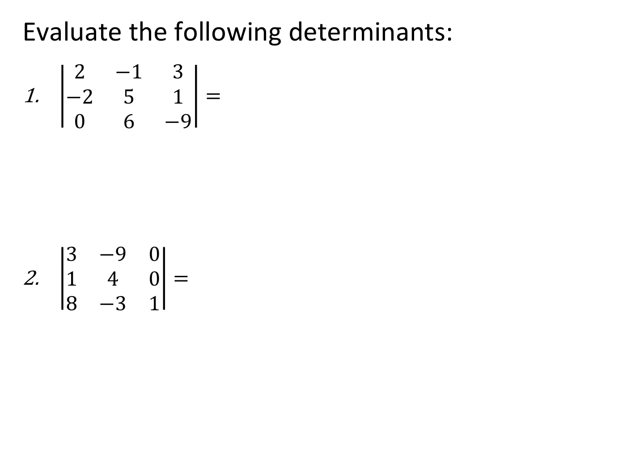We can take the determinant of any square matrix. For matrices bigger than 2x2, the standard method is determinants by minors, but there's a shortcut that only works for 3x3 matrices. For a 3x3, we take the first two columns and rewrite them to the right of the original matrix. Now we do the same idea as the 2x2 — multiply down and subtract multiply up — but now there are three full down diagonals and three full up diagonals. We add up the three down diagonals, then subtract the sum of the three up diagonals.